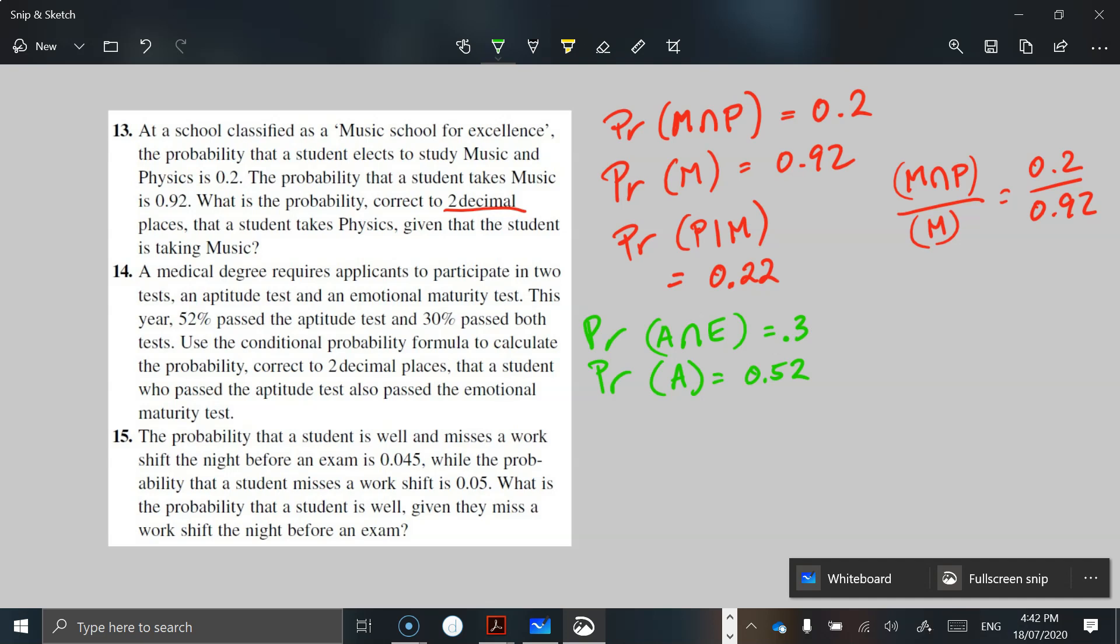So we're looking at the probability of E, the emotional test, given that they passed the aptitude test. And in this case here, it's going to be A intersection E divided by the probability of the aptitude, which is just A. And in this case, it's going to be 0.3 divided by 0.52. And if you put that in your calculators, you end up getting 0.58 if we're rounding to two decimal places. All right.